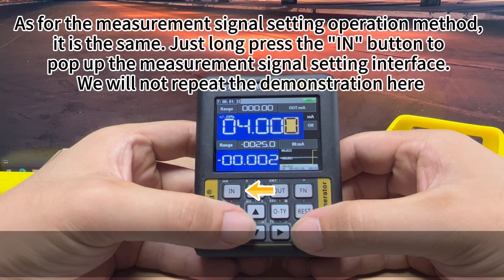As for the measurement signal setting operation method, it is the same. Just long press the in button to pop up the measurement signal setting interface. We will not repeat the demonstration here.